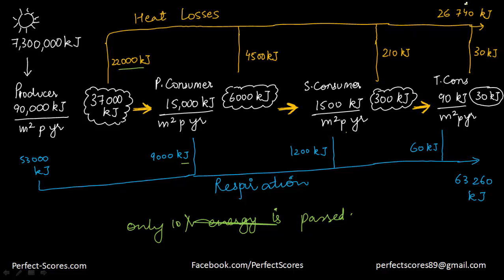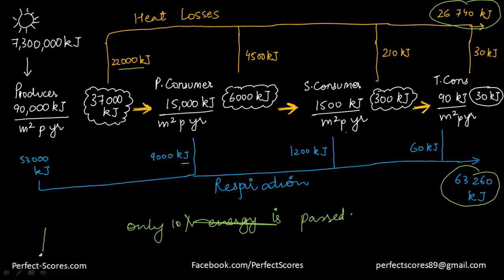The total heat lost is close to 26,740 kilojoules and the energy lost due to respiration is 63,260 kilojoules. The energy levels keep depleting by 90% at every level, which is why energy transformation is never 100% efficient — it is only 10% efficient. That is why we get different kinds of pyramids of energy, which we will discuss in the next video. Thank you for watching, and don't forget to visit us at perfect-scores.com to share, like, and send your feedback.